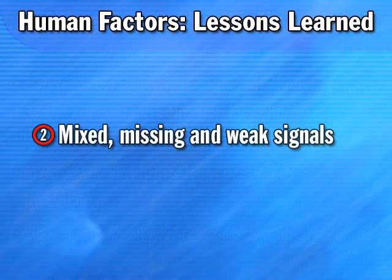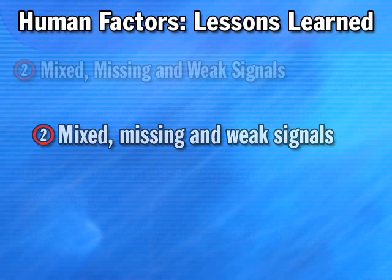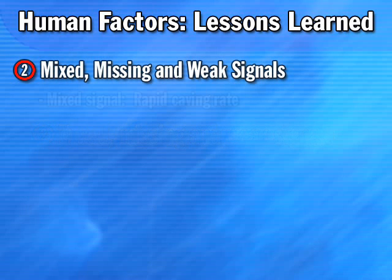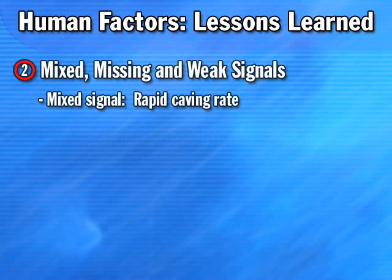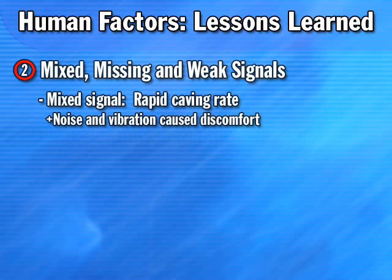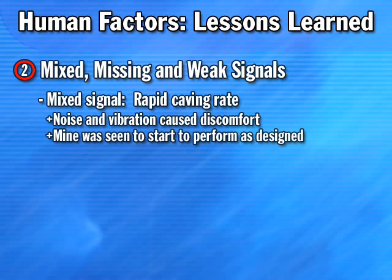Mixed signals — hazard or risk information that indicates a possible problem at one point and no problem at another — combined with previously discussed issues of uncertainty, could have clearly affected the quality of decision making in a new block caving project. The rapid caving rate might have been a mixed signal. Clearly the noise and vibration caused some discomfort, but the recognition that such caving meant the mine was starting to perform as designed may have lessened the concern.